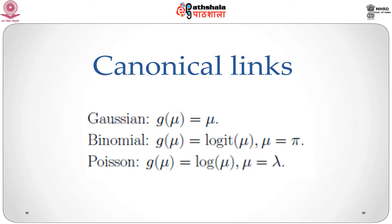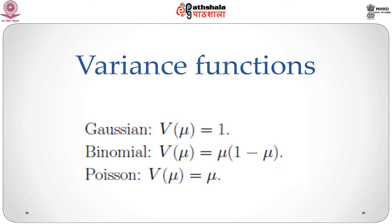Canonical links arise when theta equals eta. For the Gaussian family this leads to the identity link g(mu) = mu. For the binomial family this leads to the logit link g(mu) = logit(mu), where mu is the binomial proportion. For the Poisson, the canonical link is the log link for the rate parameter lambda. The variance functions are: for the Gaussian, v(mu) = 1; for the binomial, v(mu) = mu*(1 - mu); and for the Poisson, v(mu) = mu.